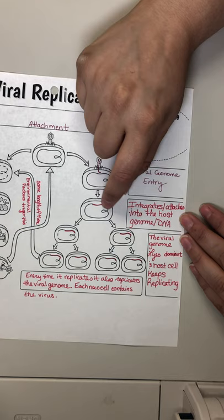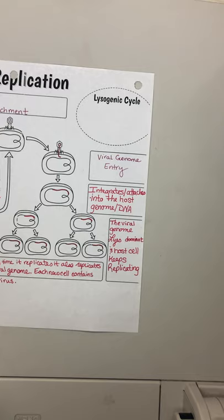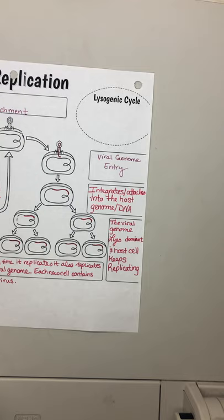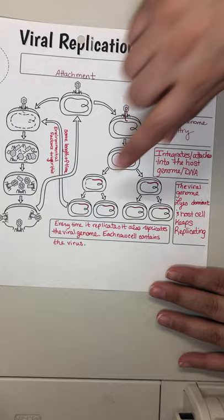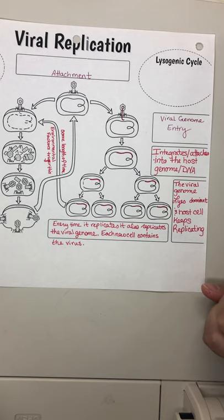The viral genome lies dormant, and the host cell keeps replicating. It's going to split into two, and those split into two, and so on. At this point the cell does its normal job, going about its normal business without even realizing anything is different. Every time it replicates itself, it also replicates the viral genome, so each new cell contains the virus.